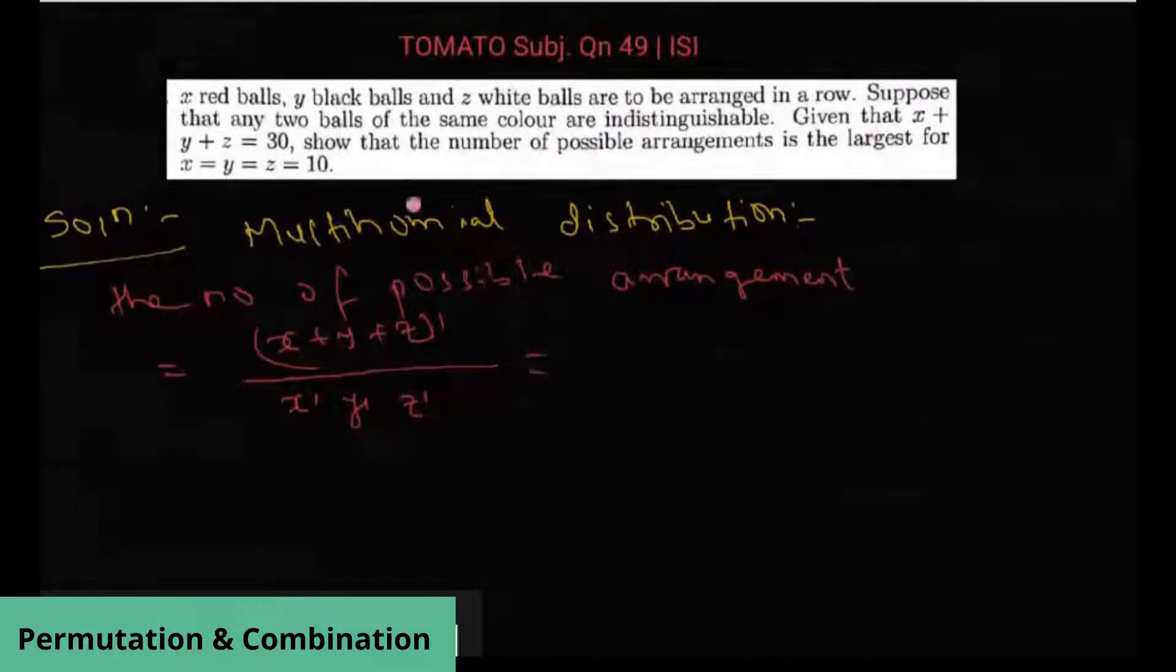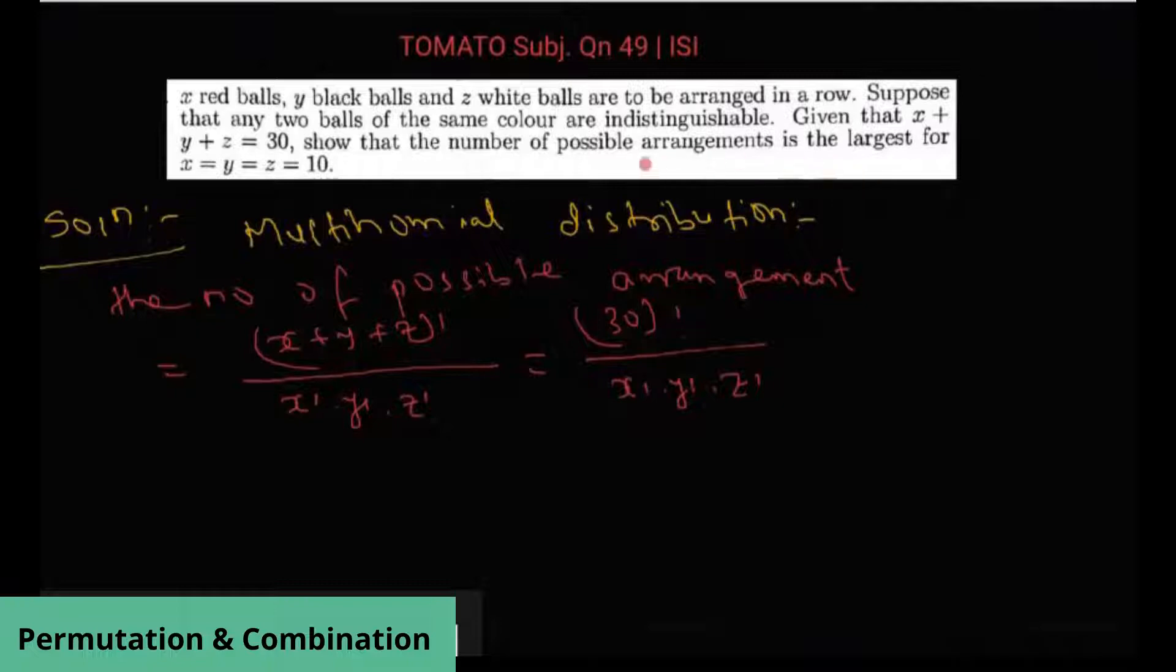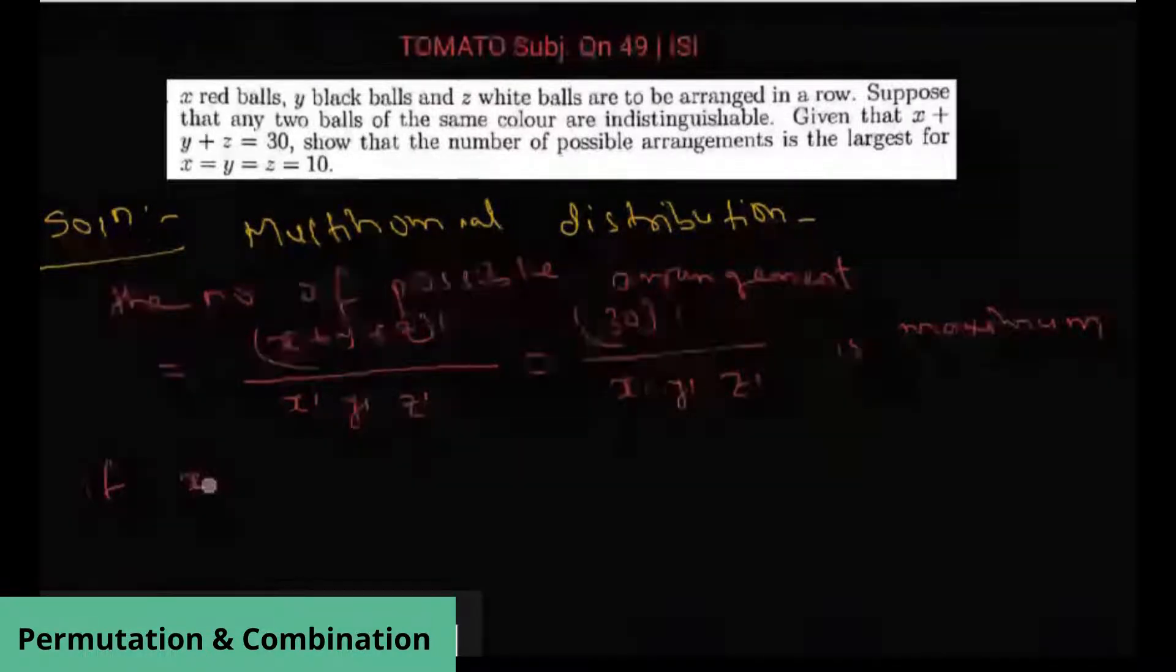Since x plus y plus z is equal to 30, this is 30 factorial divided by x factorial into y factorial into z factorial. Now, we need to find x, y, z such that this is maximum.